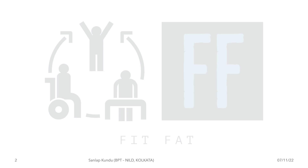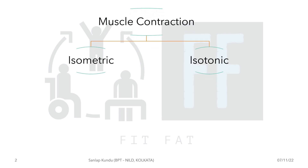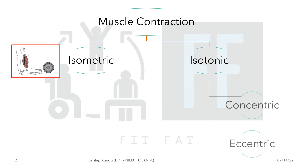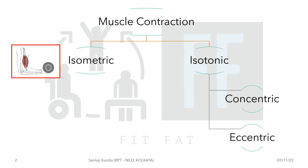When we talk about muscle contraction, there are mainly two types of contraction. First is the isometric and second is the isotonic. In isometric, the muscle length is the same, and in isotonic the length is changed. Isotonic contraction can happen in two ways: first is concentric and second is eccentric.